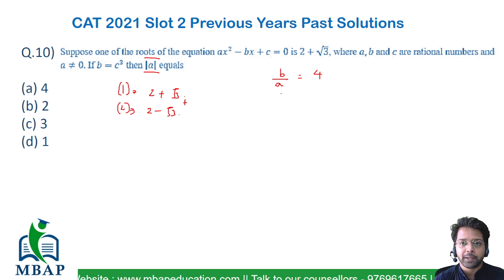The product of the roots is given by c/a, which equals (2 + √3)(2 - √3) = 1. From this we get b = 4a and c = a.